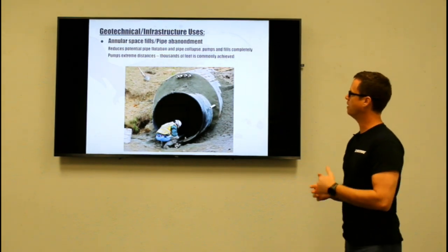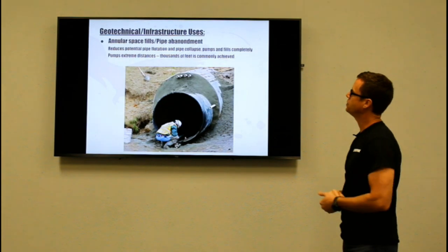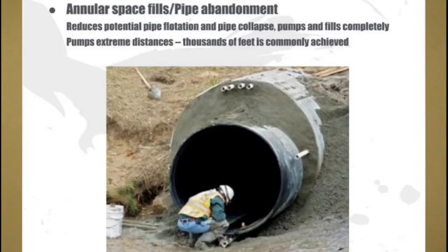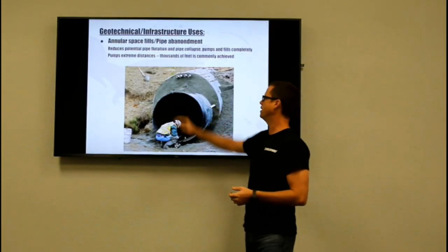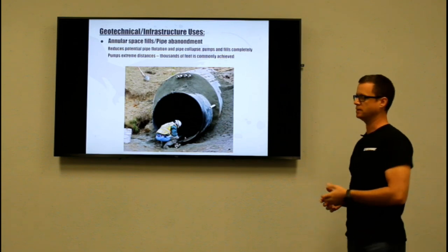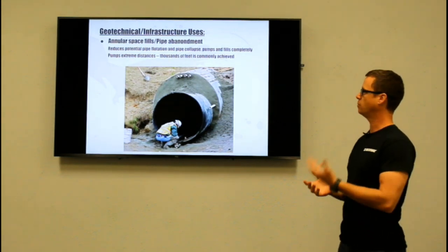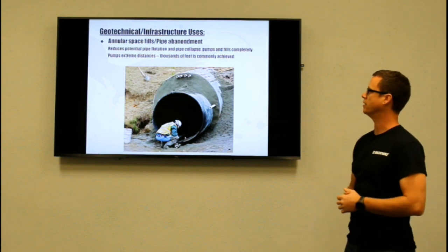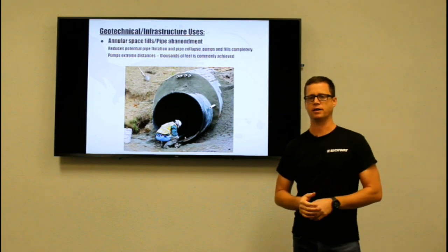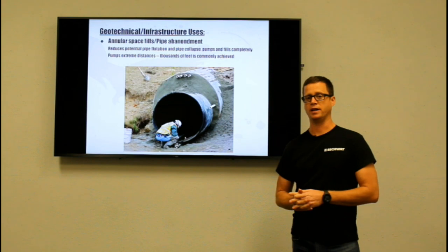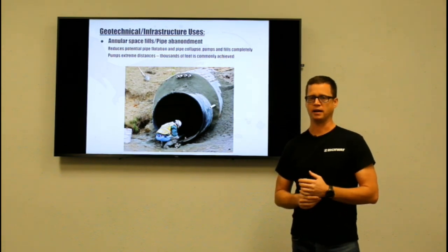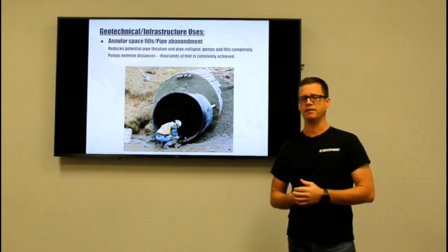We're going to take a closer look at a few of the more popular applications, starting with some of the geotechnical and infrastructure uses — annular space filling and pipe abandonment. Both of these applications are extremely common with many of our existing customers throughout North America. One of the big advantages of cellular concrete is it reduces buoyancy and uplift on the liner pipe, giving less chance of floating it. Additionally, cellular concrete can be pumped extreme distances — it's very common for it to be pumped thousands of feet from one location, which is an extreme advantage you won't find with many other materials.